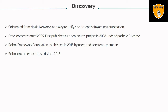Robot Framework originated from Nokia Siemens Networks as a way to unify end-to-end software test automation. It is operating system and application independent. The core framework is implemented in Python and also runs on Jython (JVM) and IronPython (.NET). The basic ideas of Robot Framework were shaped in Pekka Klärck's master thesis. Robot Framework itself is open source software released under the Apache License 2.0.